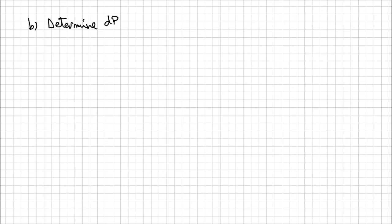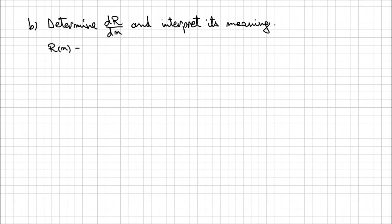The next thing we need to determine at point B is dR/dn — the derivative of the revenue function with respect to n — and interpret its meaning. We determined that R(n) = (80 − 5n)(150 + 15n).